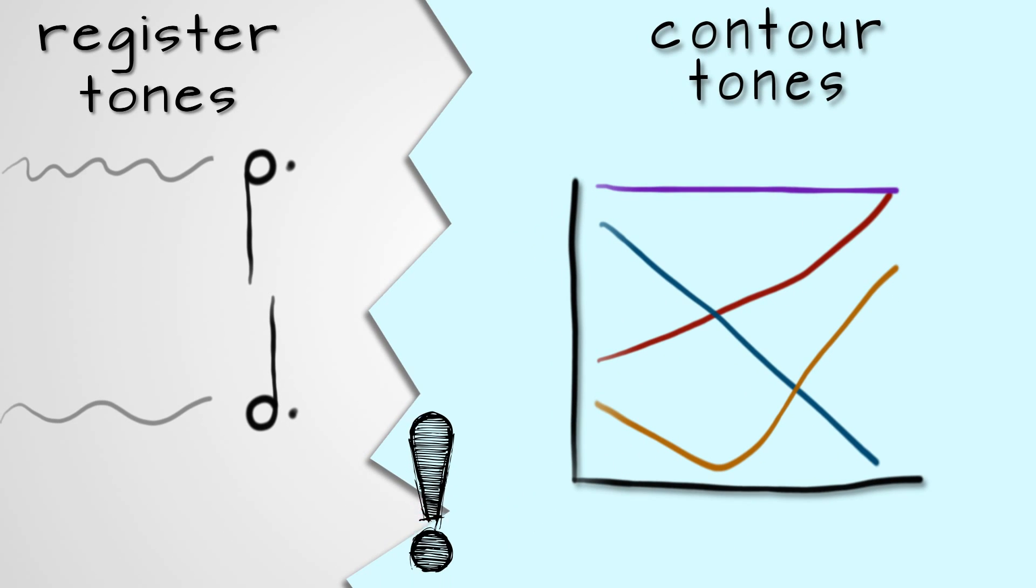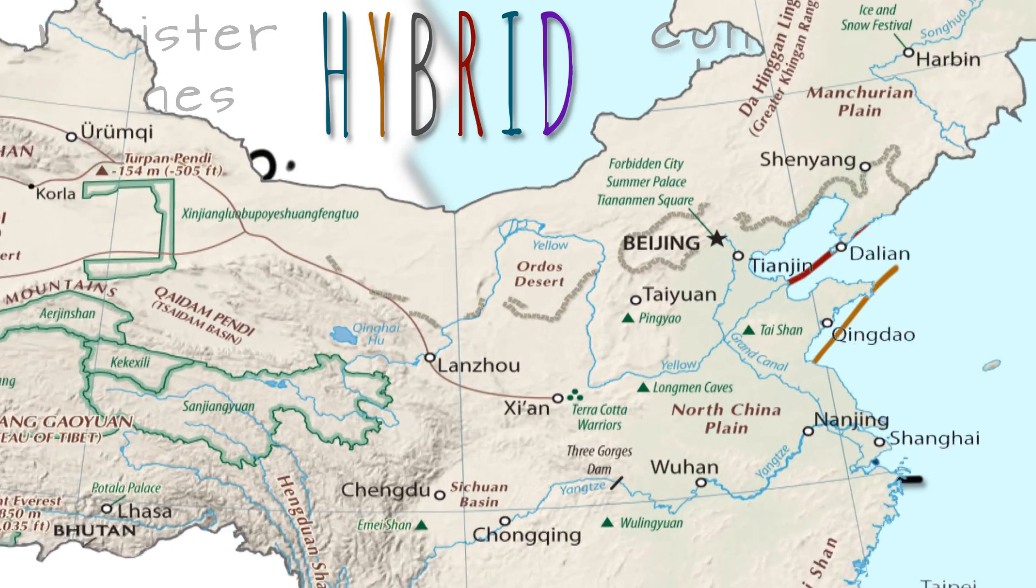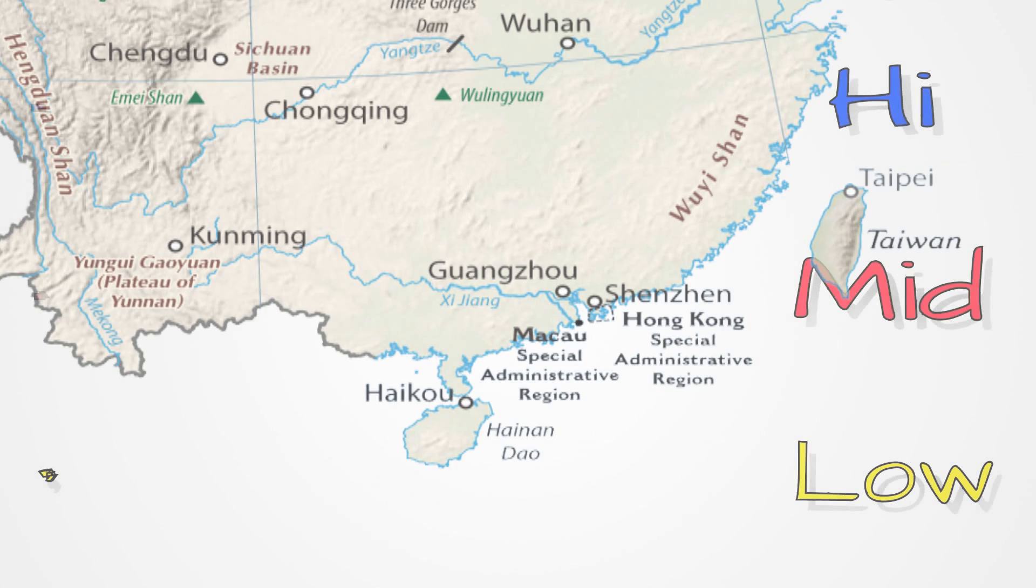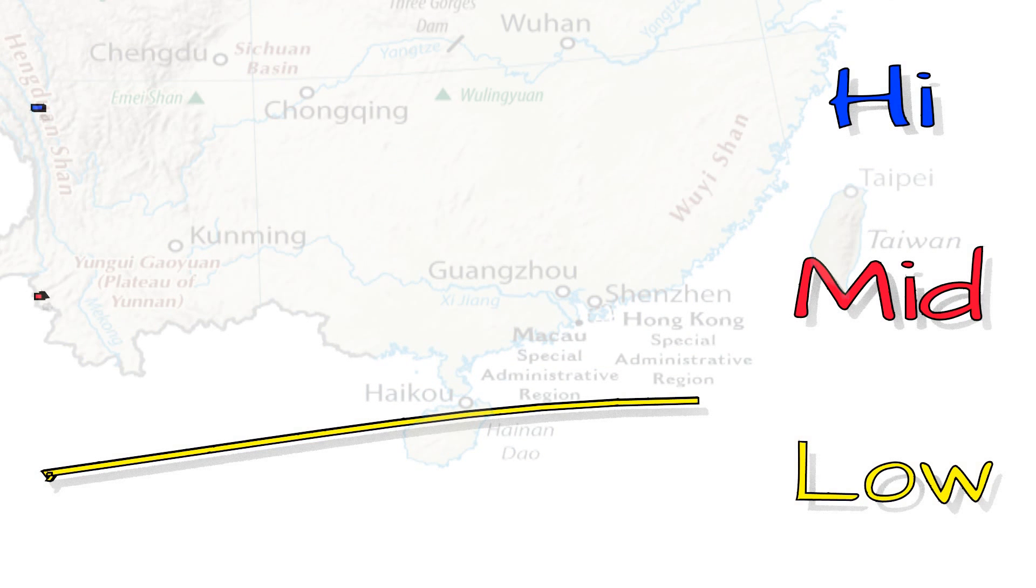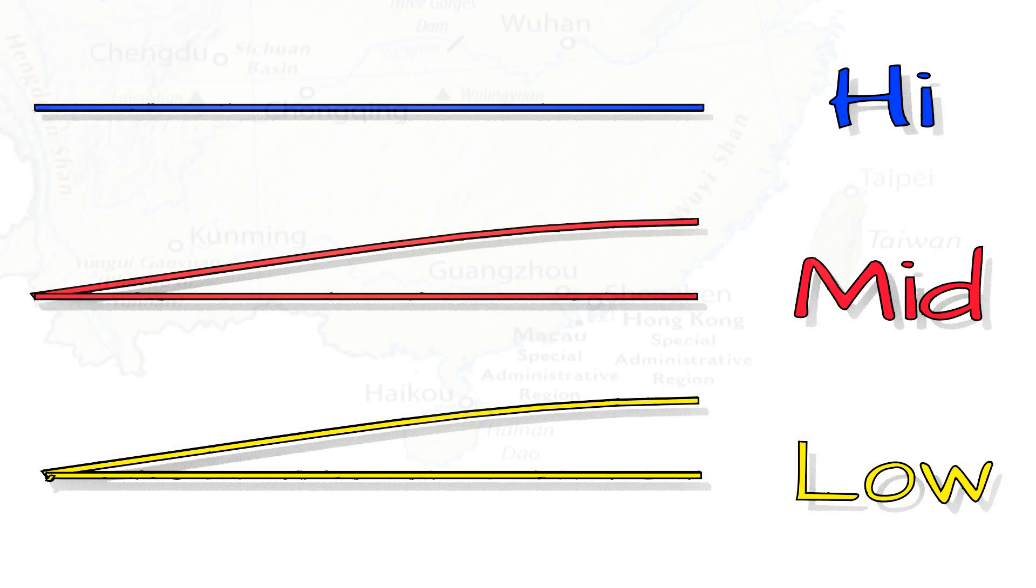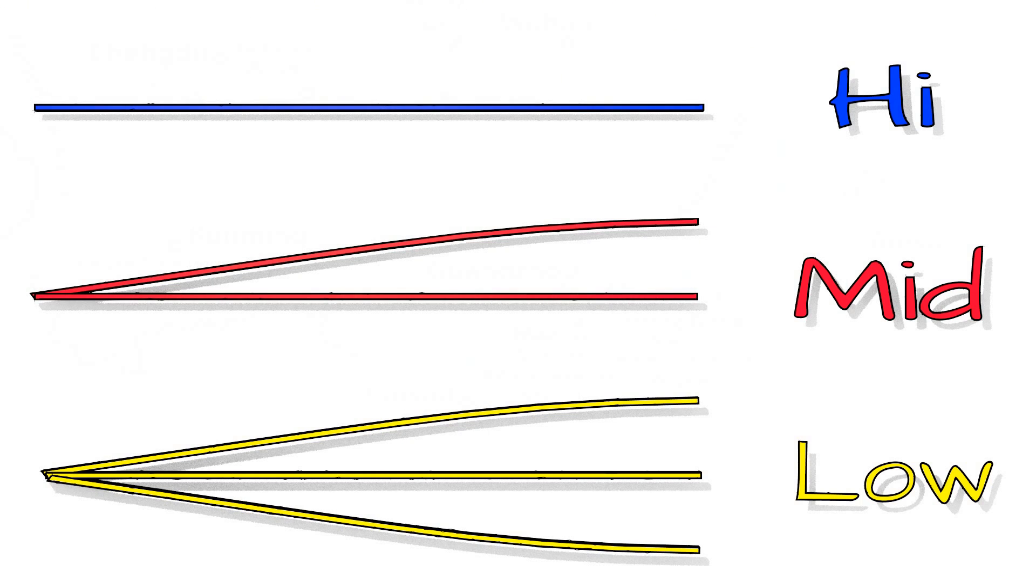Think you've mastered register versus contour tones? Well then, combine them! Mandarin may have four contour tones, but look to the south to see how Cantonese distinguishes a low-rising tone from a medium-rising tone. Oh, and it also has a high-level tone, which is different from a medium-level tone and a low-level tone. Add in that low-falling tone, and you've got six ways to sing a Cantonese syllable.